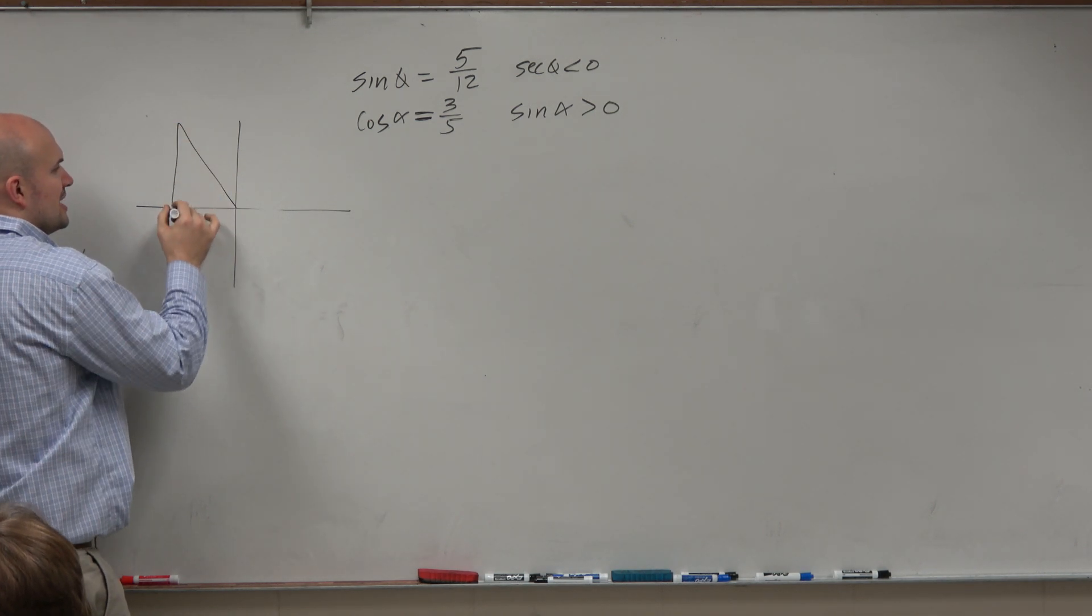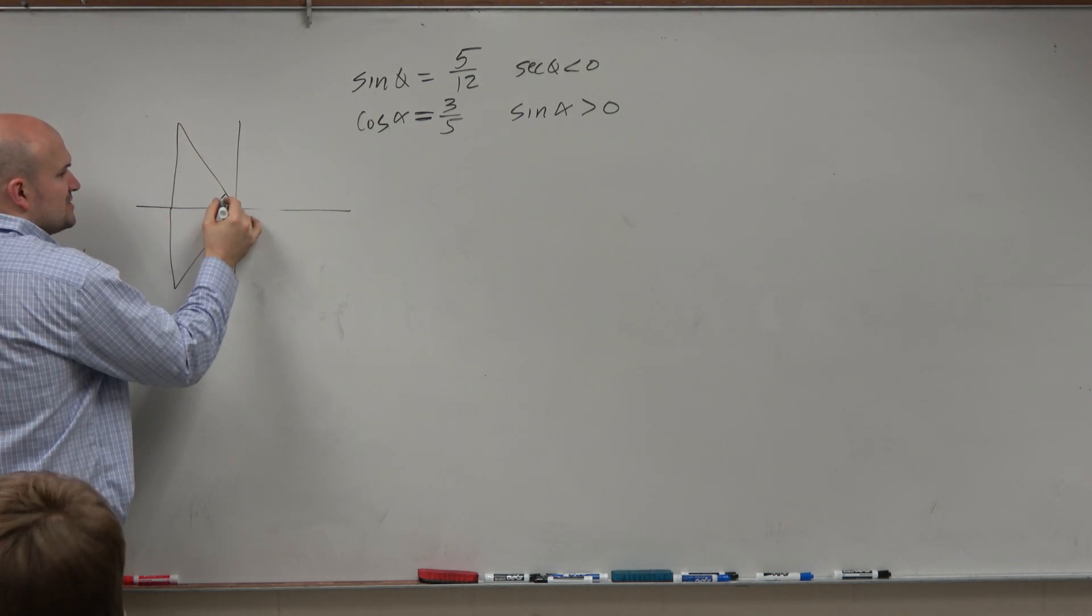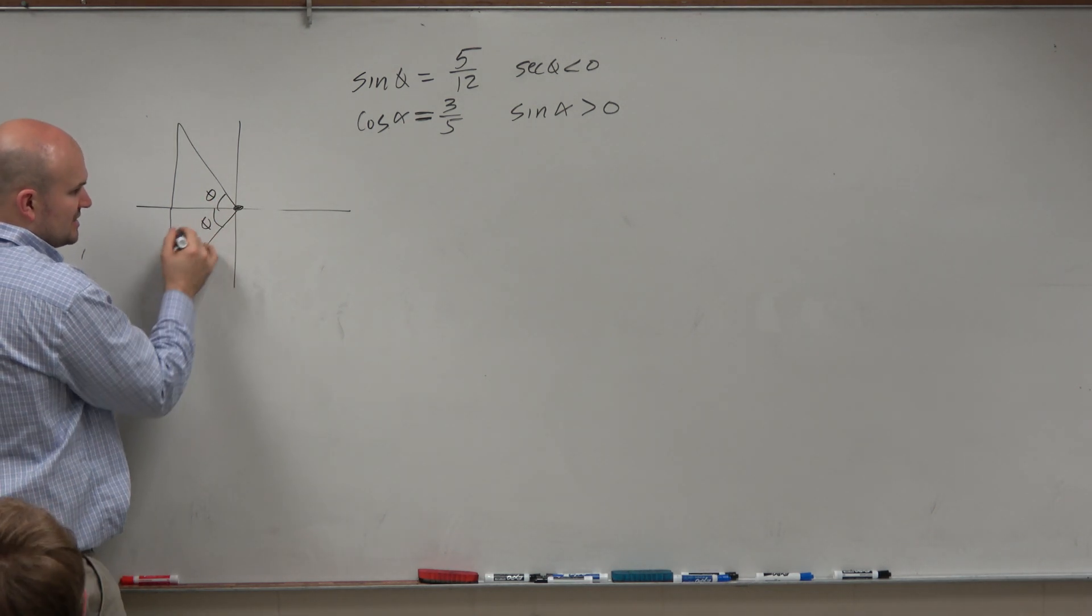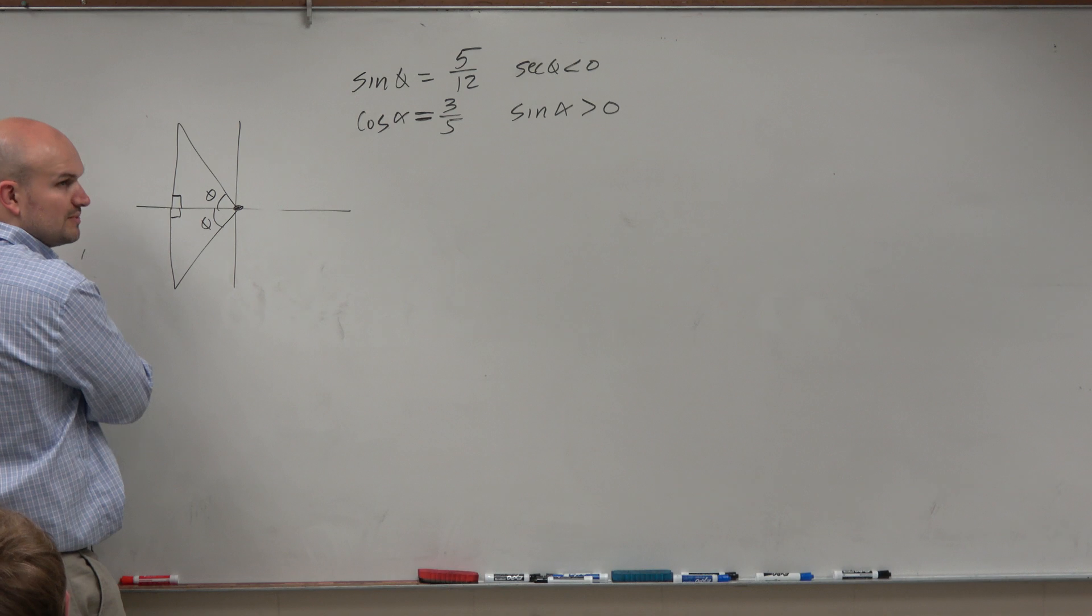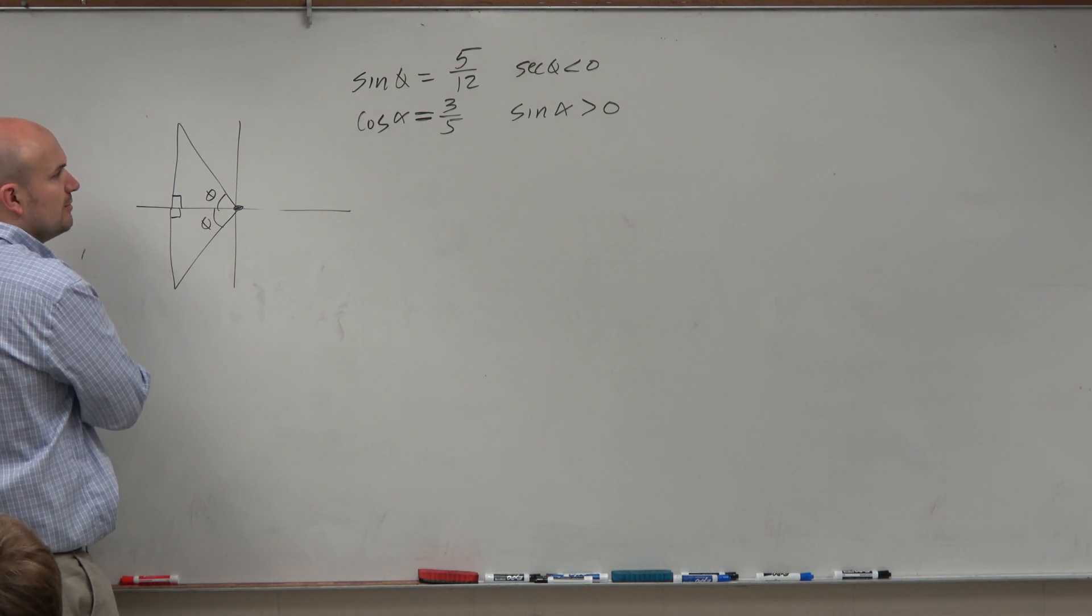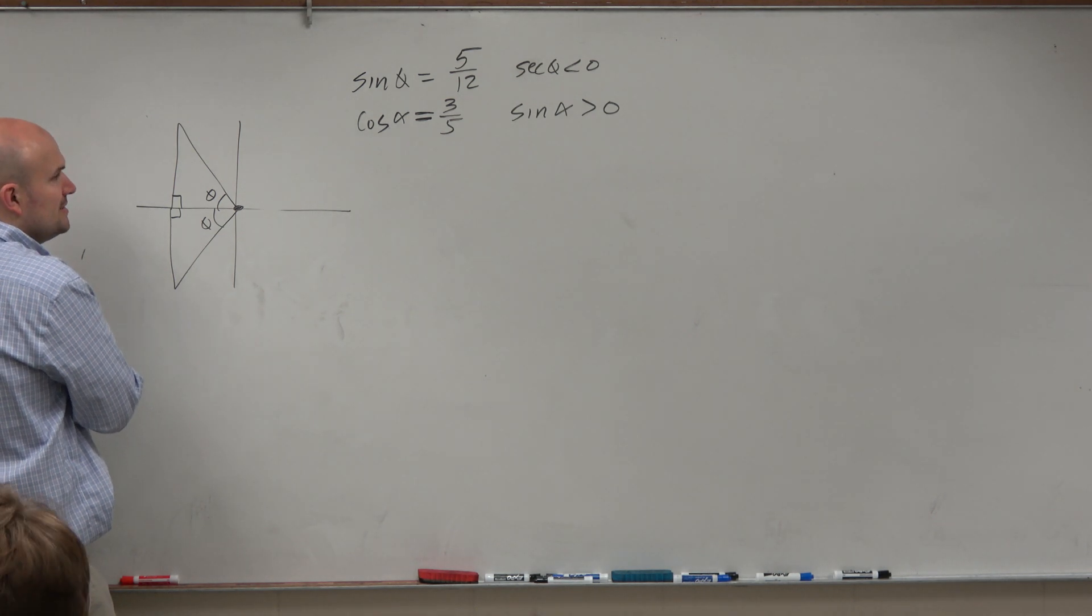If you guys remember the triangles that we created, we're always with what we called our reference angle, or our central angle, right? They're always at the vertex here. Our 90 degree angles, we're always with perpendicular to the x-axis. Now these are our two angles, but what is the only one that makes sense when sine is 5 over 12? Opposite over hypotenuse.